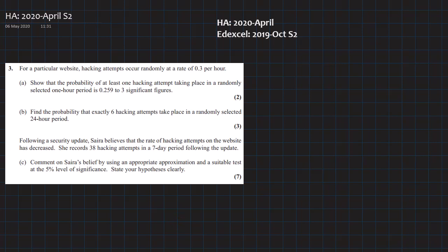This is one question from the mock we did in April 2020. It's from the October 2019 paper. For a particular website, hacking attempts occur at a rate of 0.3 per hour.